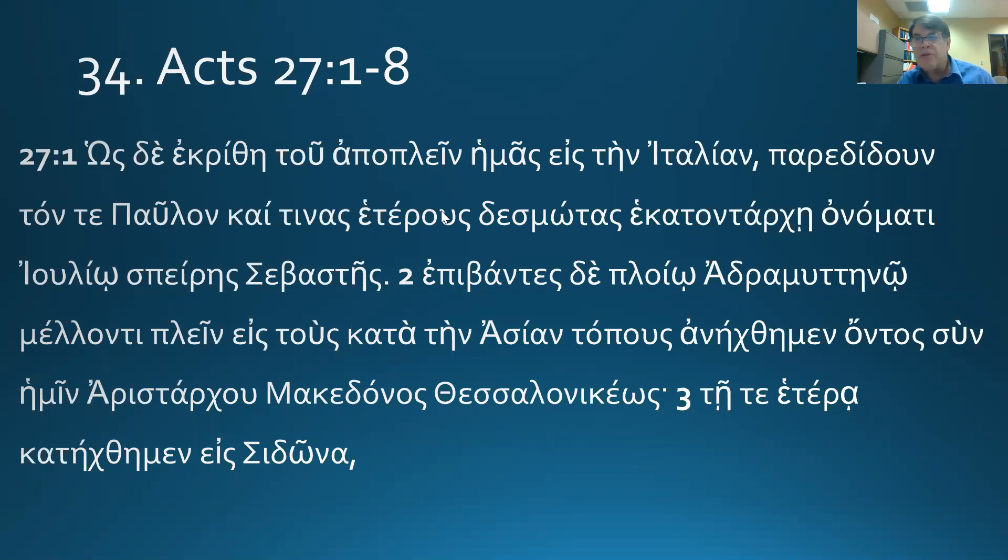So anyway, Luke is with them and someone else down here, Aristarchus. Anyway, it was determined, aorist passive theta eta, aorist passive from crino, indicative third singular, and it was determined for us to sail. To with the infinitive is either a purpose or result construction. But it translates as it was determined for us to sail, something like that.